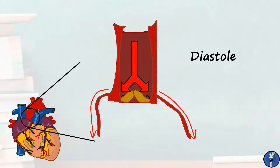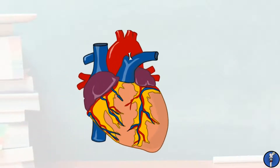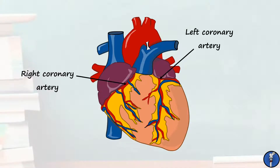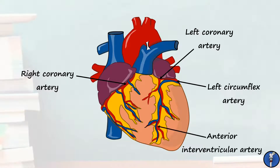Now let's take a look at where that blood goes next. There are two arteries that originate in the aortic sinuses — these are the right and left coronary arteries. Both gradually meander towards the apex and provide numerous branches as they do. The left coronary artery travels between the pulmonary trunk and the left auricle to emerge in the coronary sulcus. From here, it branches into two main divisions: the anterior interventricular branch, also commonly known as the left anterior descending, and the left circumflex branch.